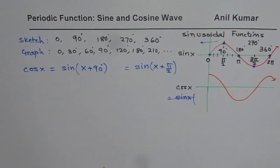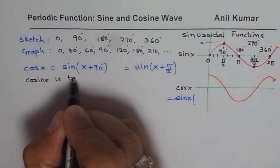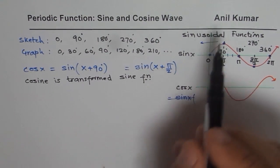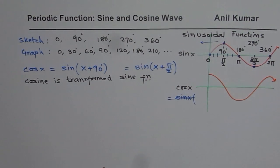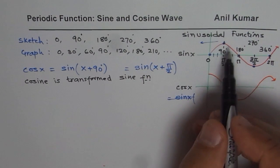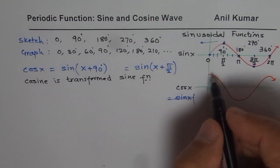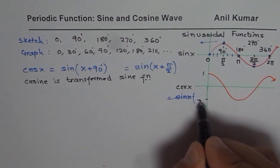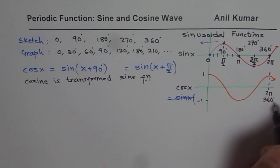Whether working in radians or degrees, we see that cosine is a transformed sine function. Therefore we use just one name — sinusoidal — and by default it refers to the sine function. The cosine graph or equation can be derived from the sine by translating it a quarter of a cycle to the left. For both sine and cosine, the maximum value is 1 and the minimum value is -1, and the time period is 2 pi radians or 360 degrees.